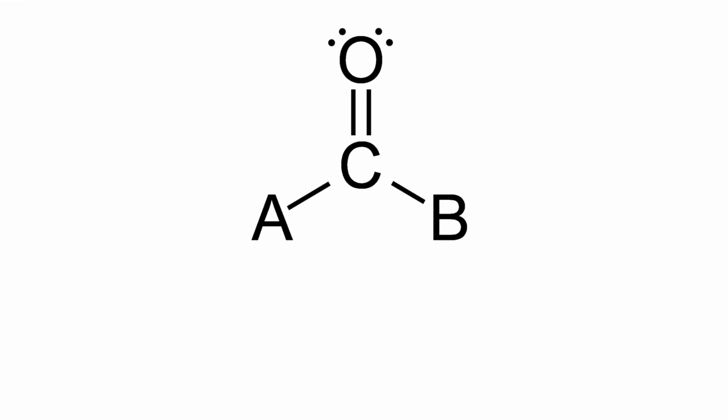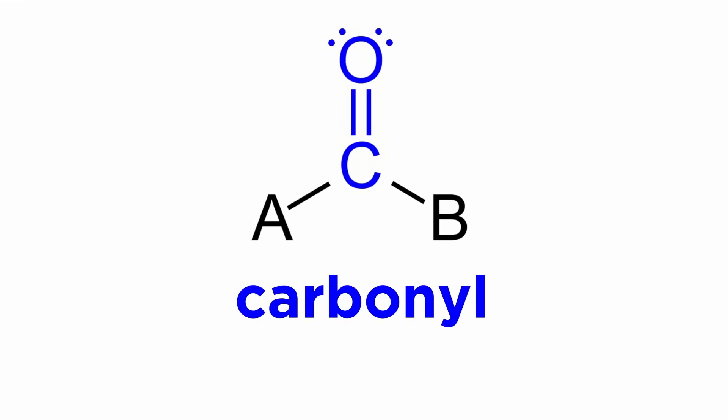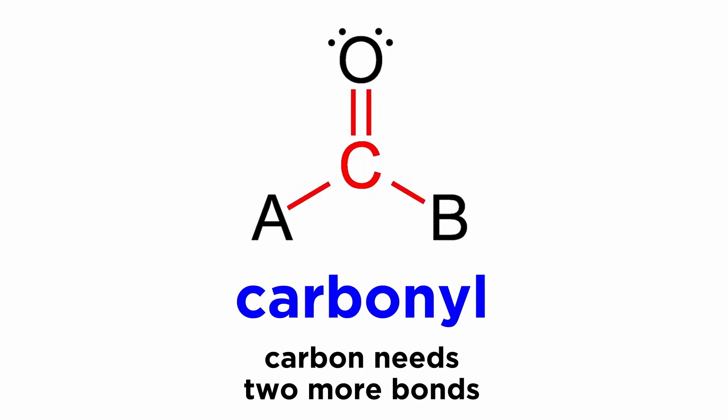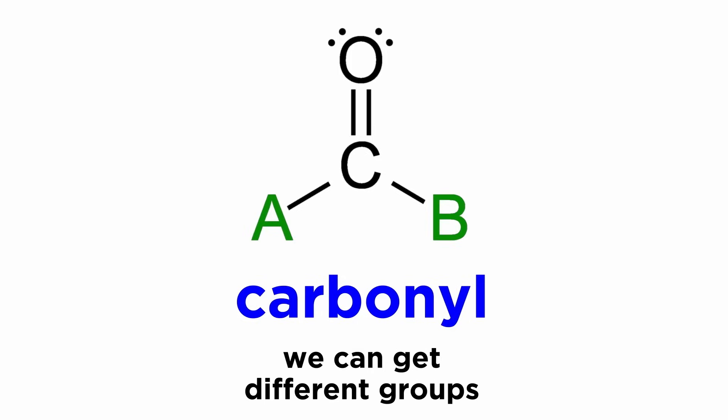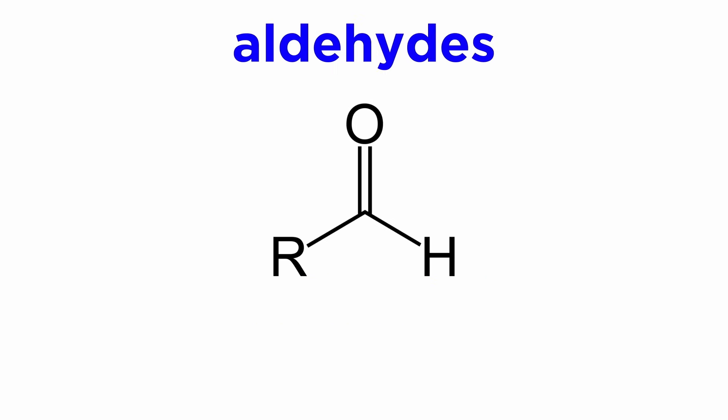A carbonyl is simply a carbon atom with a double bond to an oxygen atom. The oxygen has two bonds and two lone pairs, so it's all set, but the carbon atom will need two more bonds. Depending on what sits on either side of this carbon atom, we can get a variety of different functional groups.